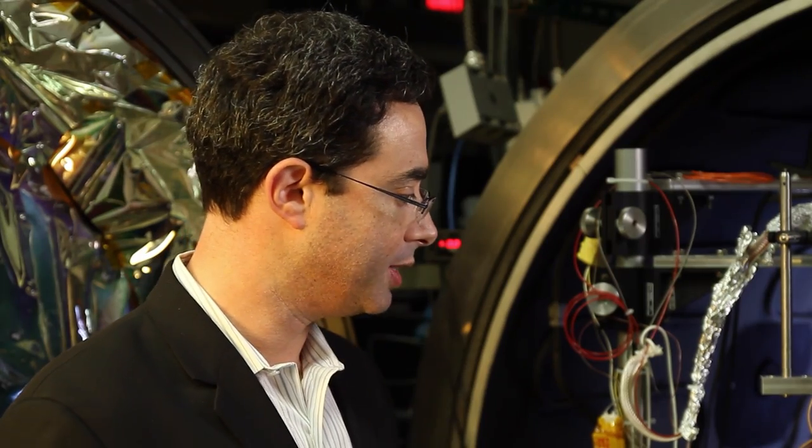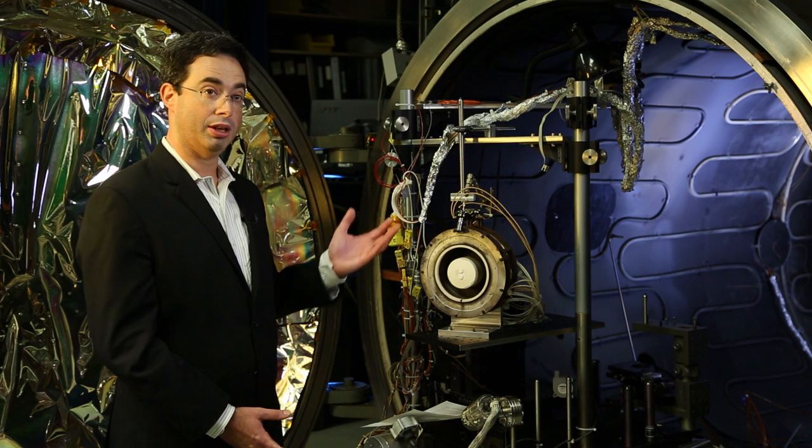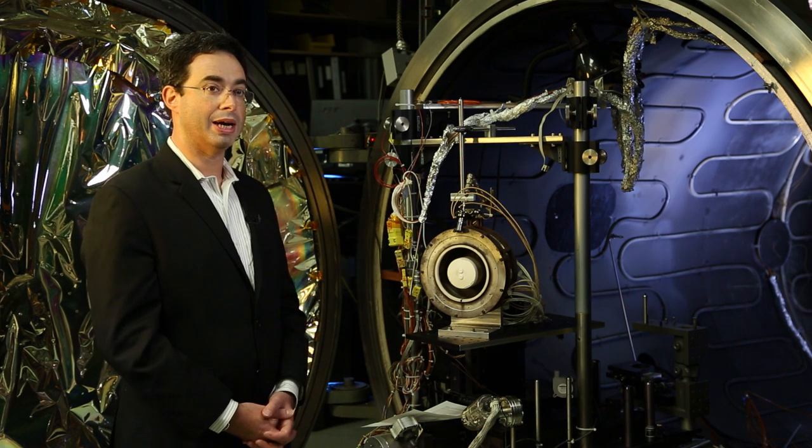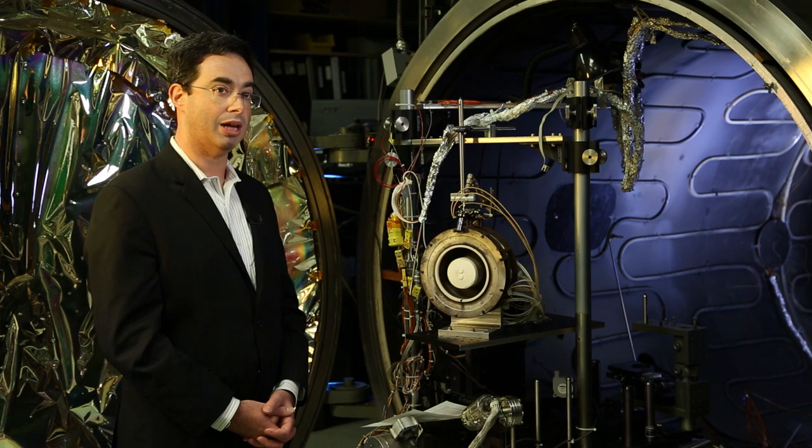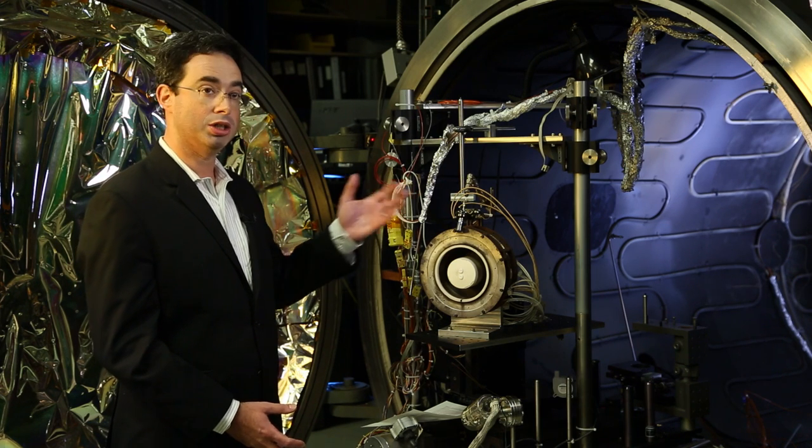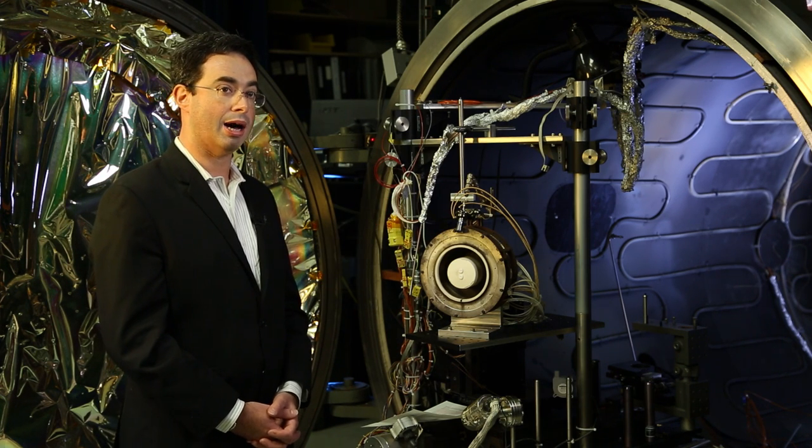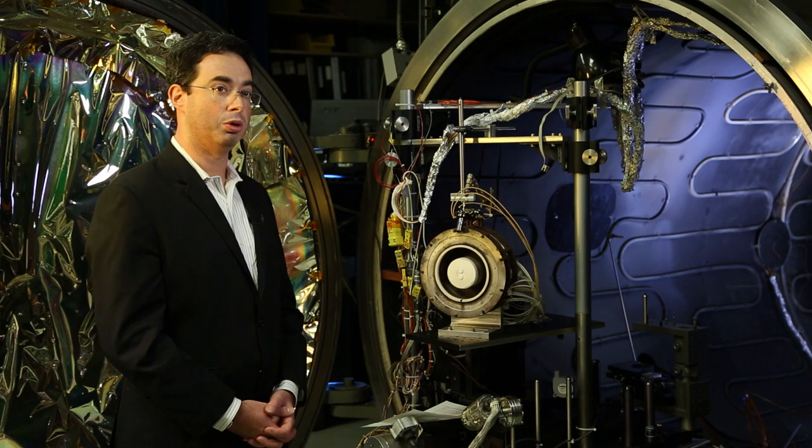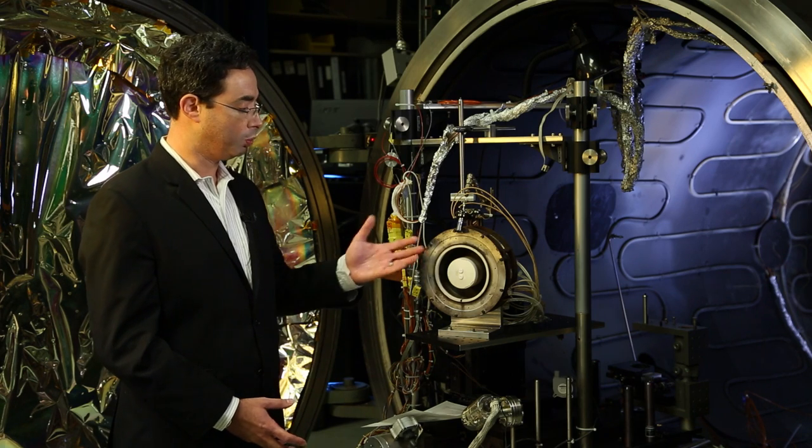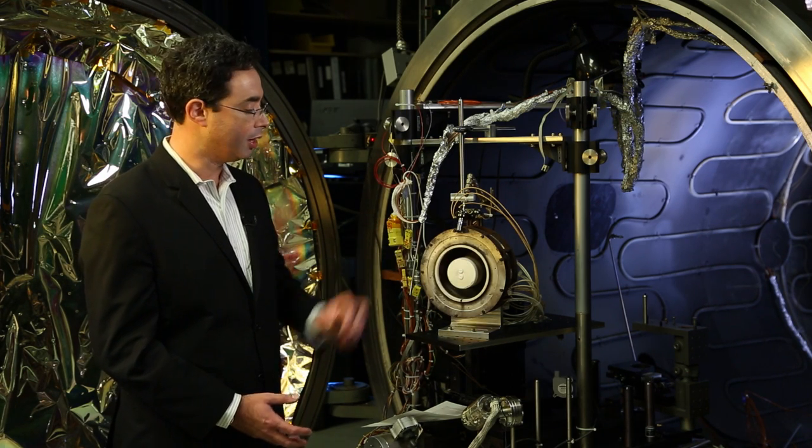You can think of this hall thruster as a really fancy fluorescent light bulb. You apply electrical energy to the thruster and you supply some gas, just like there is some gas in the fluorescent light bulb. The electrical energy that you supply will break the gas down into the plasma, so you will have ions and electrons that will be inside this device right here.